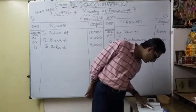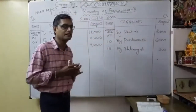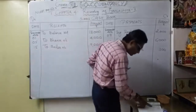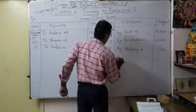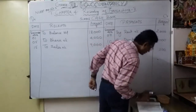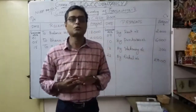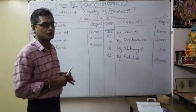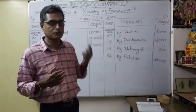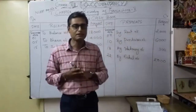Next: December 22nd — cash paid to Ragul on account 2000. Entry: Ragul account debit to cash account. He is the receiver — personal account rule: debit the receiver. So date is 22nd — on the payment side: 'By Ragul account' 2000. In the Ragul account: 'To cash account 2000.' So credit part in the cash book — by Ragul account 2000 — under the payment side.